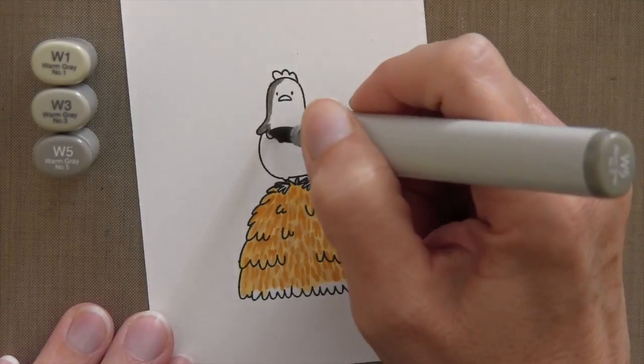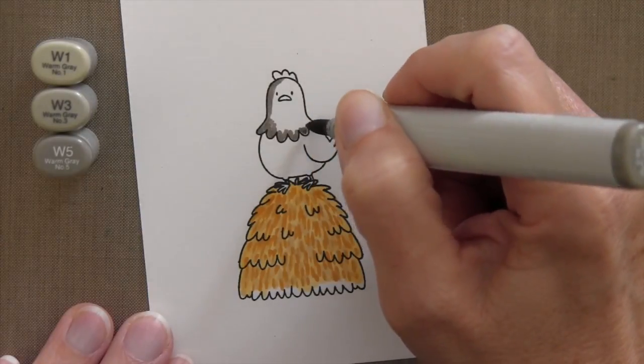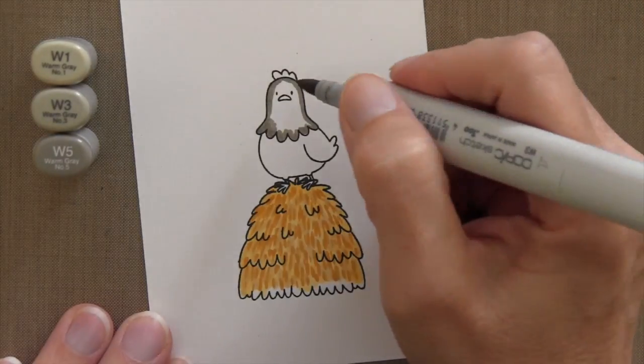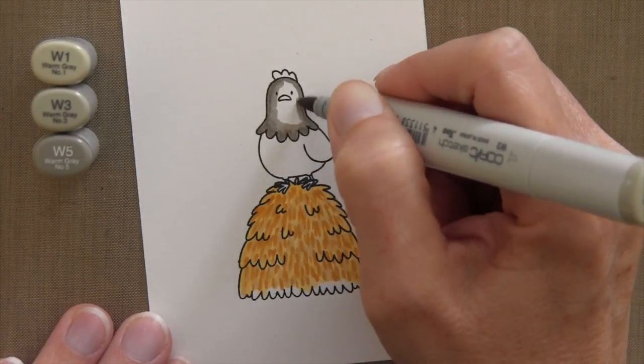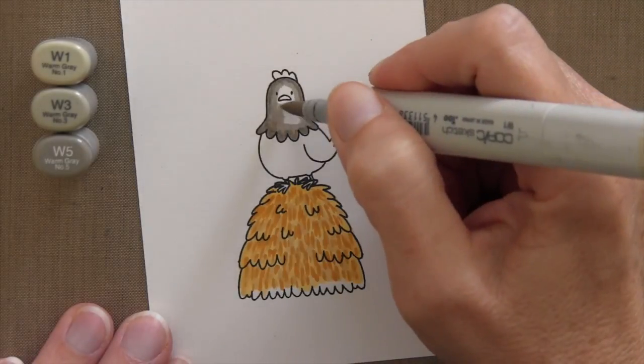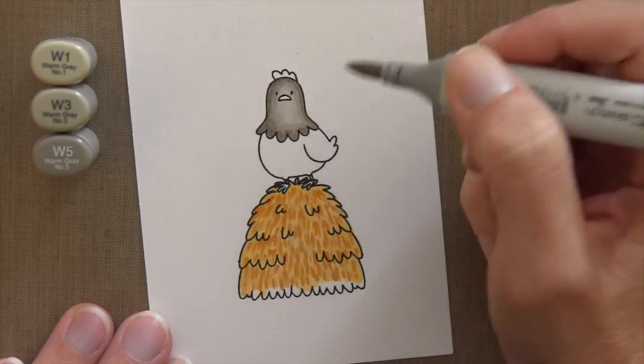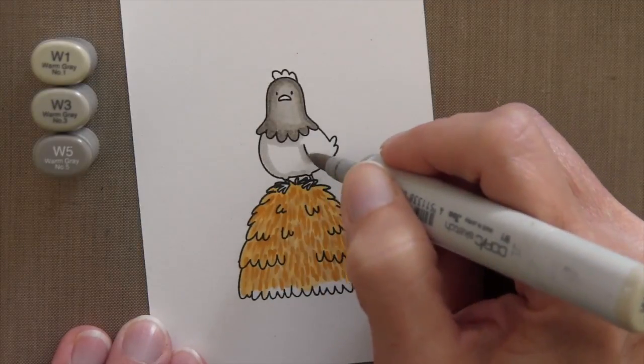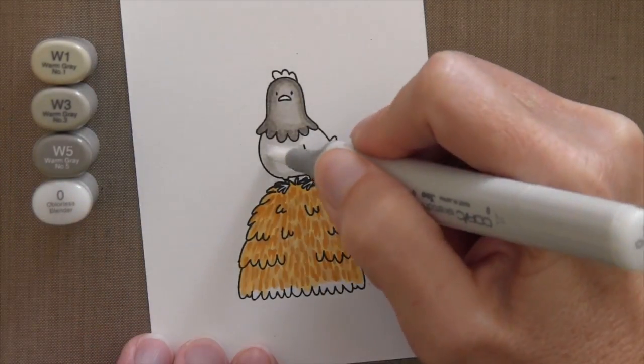So after that I went ahead and colored my chicken I'm using W1, W3, and W5. You know sometimes I do an all over color of the lightest color and then I color over it with the other markers but sometimes if I have a small area I'll start with the dark and end with the light and the reason why I do that is because when it's a small area I don't want to saturate the paper too much with color.